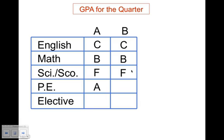PE, on the other hand, is a class that we attend every other day. So that A is just for my A day. My elective, if I got a D, that's just for B day.